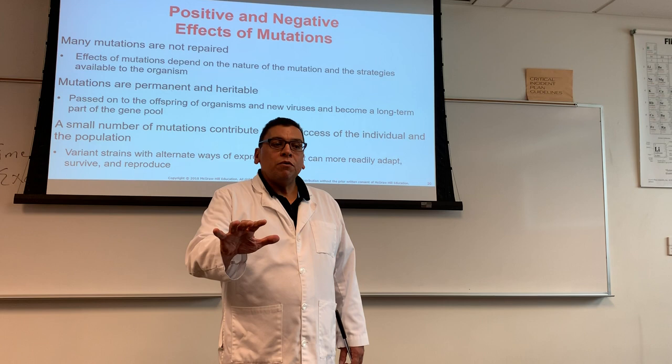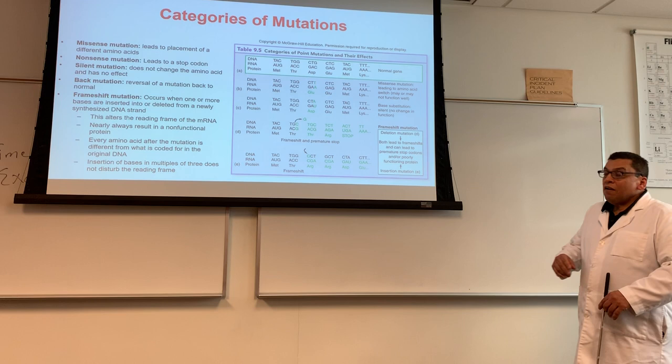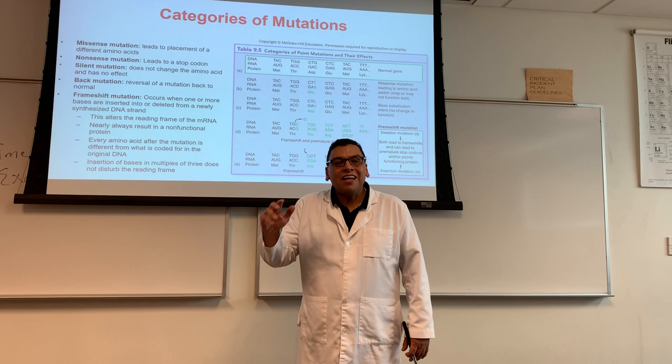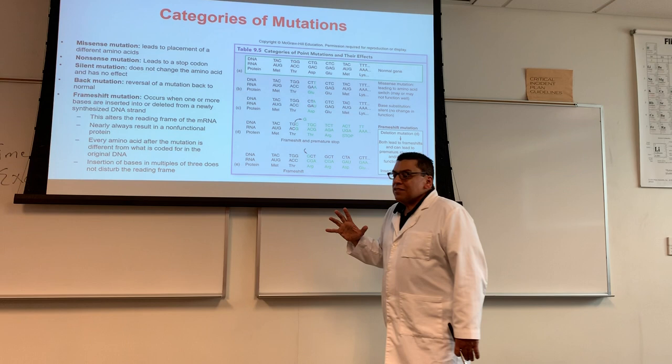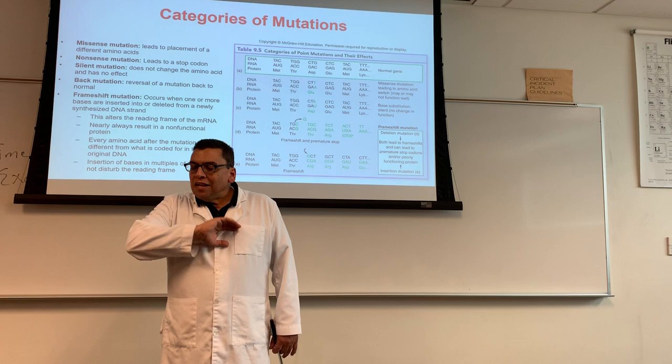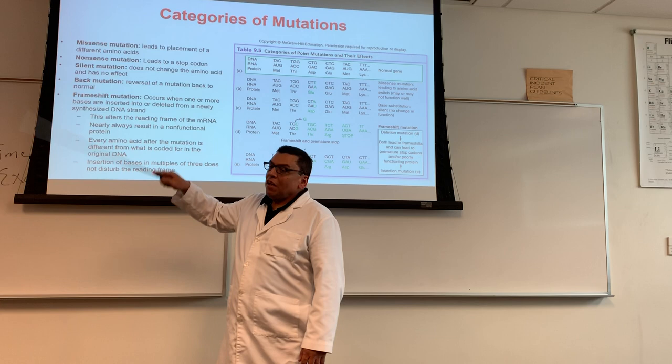Some mutations simply mark you for who you are — they don't do anything to your proteins. There are different kinds of effects that mutations can have. The mutation happens at the DNA level, but the effect is going to happen at the protein level. In some cases, you may have a genetic mutation at the DNA level that does nothing to your transcription and translation — the protein is exactly the same.